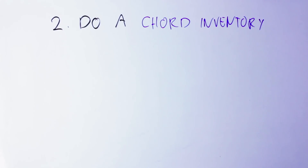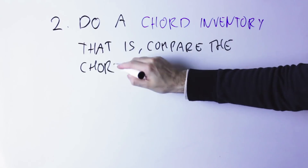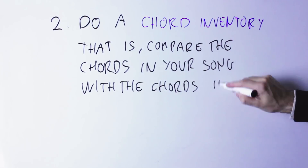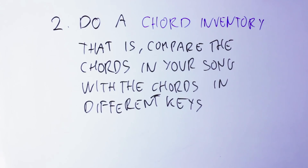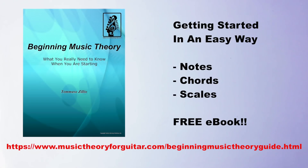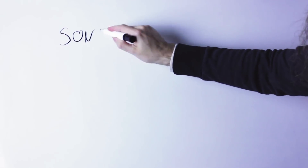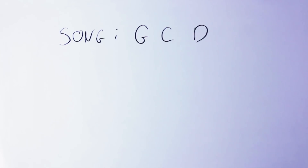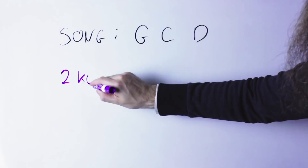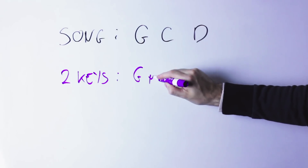So let's go straight to step number two: do a chord inventory. What does that mean? First, take all the chords in your song, then compare those chords with the chords that are in every key. If you don't know the chords in all the keys, you can find them in the free beginning music theory ebook at this link. The idea is to match the chords you have in your song with the chords in every different key. For instance, if your song has G major, C major, and D major, you'll find that only two keys contain all three: the G major key and the E minor key.